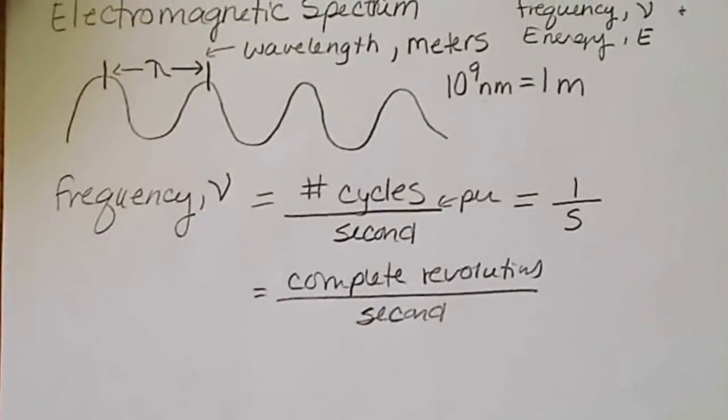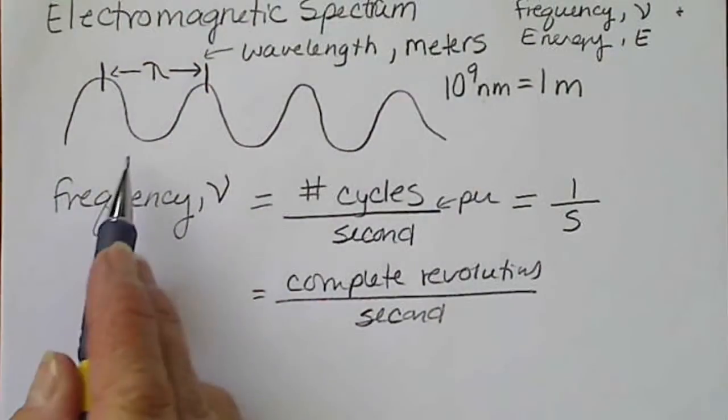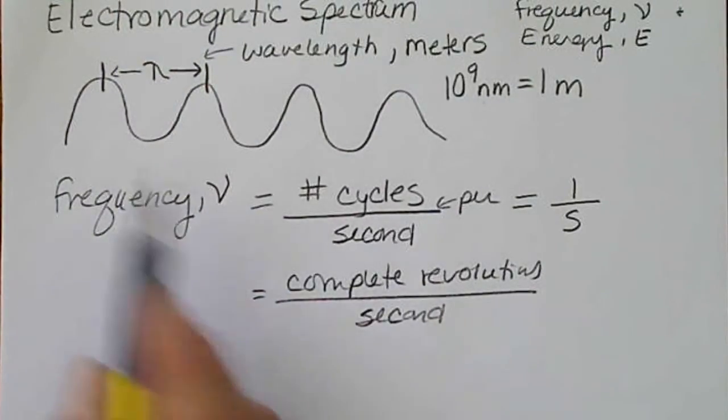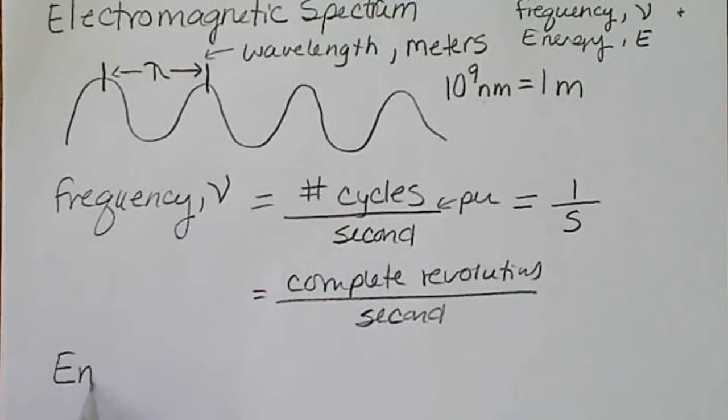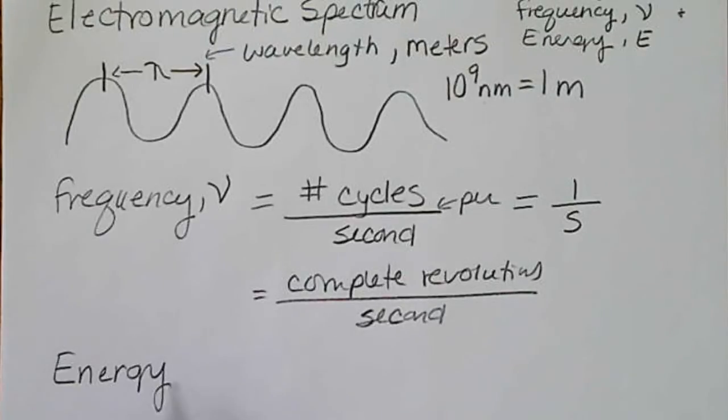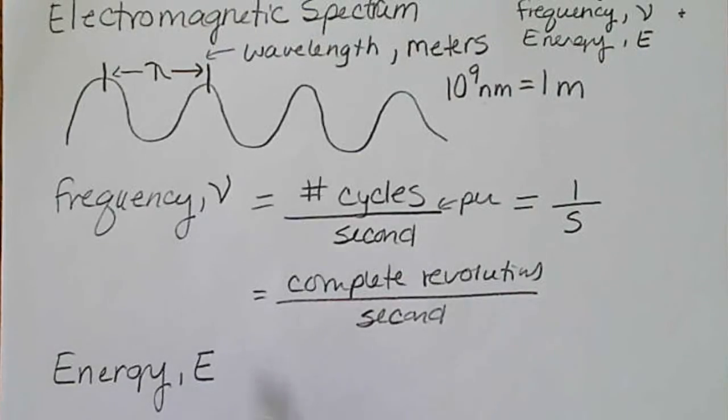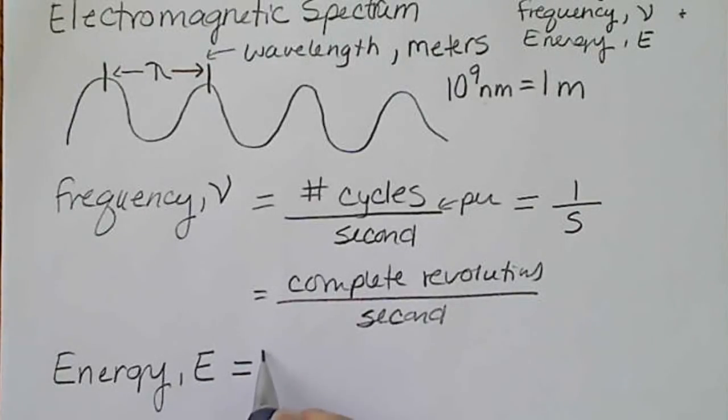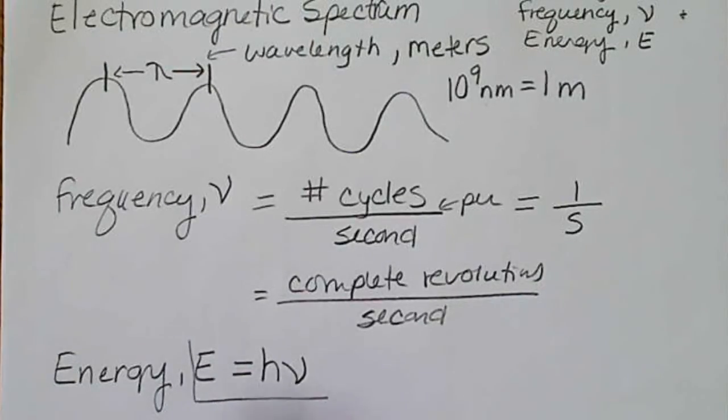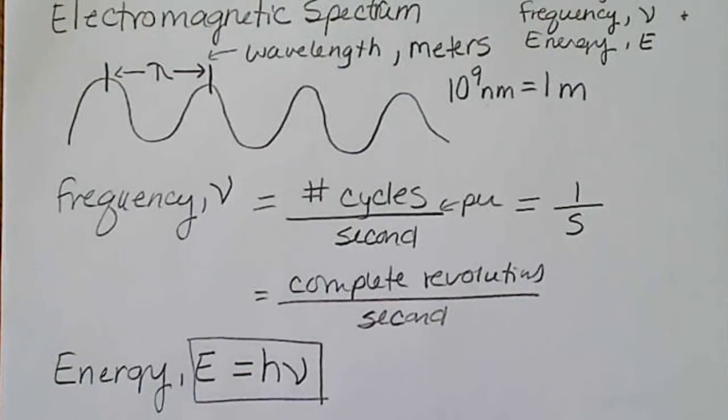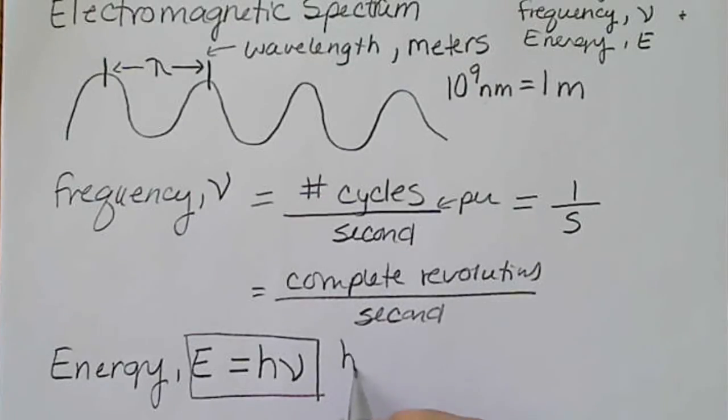And then the energy of this type of wave, we just write as a capital E. So the energy E actually is in terms of frequency. So we'll see this equation in the book. H is a constant, Planck's constant.